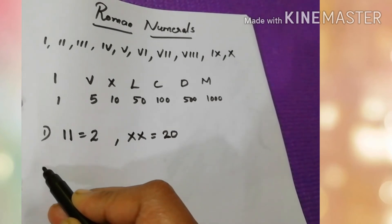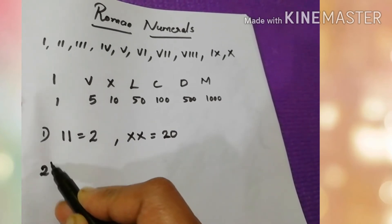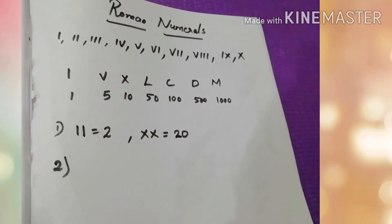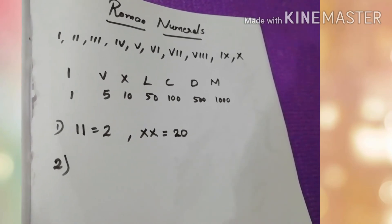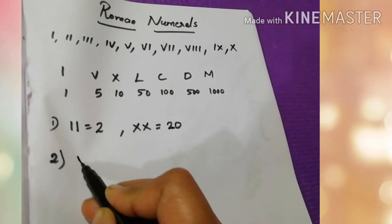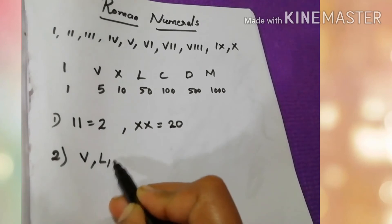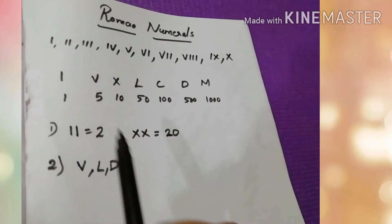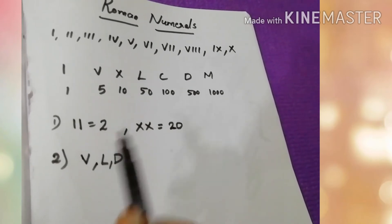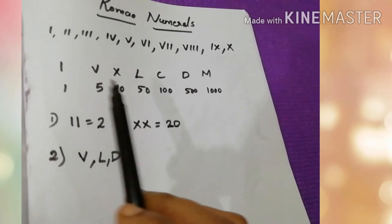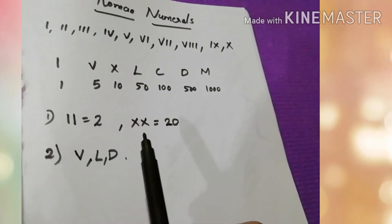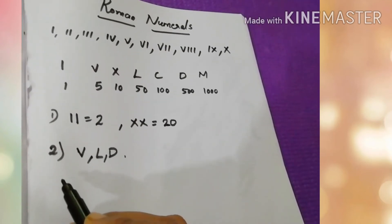Second rule: a symbol is not repeated more than 3 times. But the symbols V, L, and D are never repeated. That is, V, L, and D are never repeated in a number. We can use other symbols up to 3 times, but cannot use them more than 3 times repeatedly.